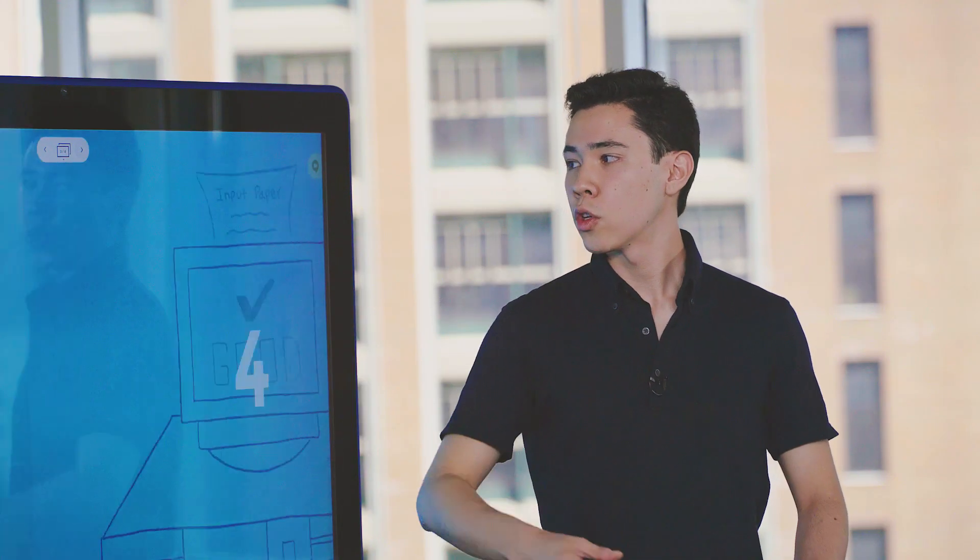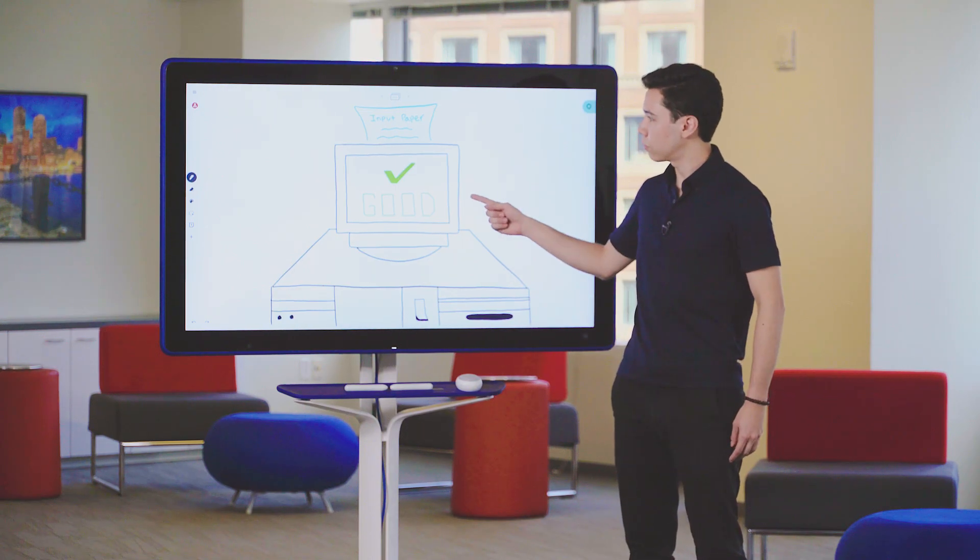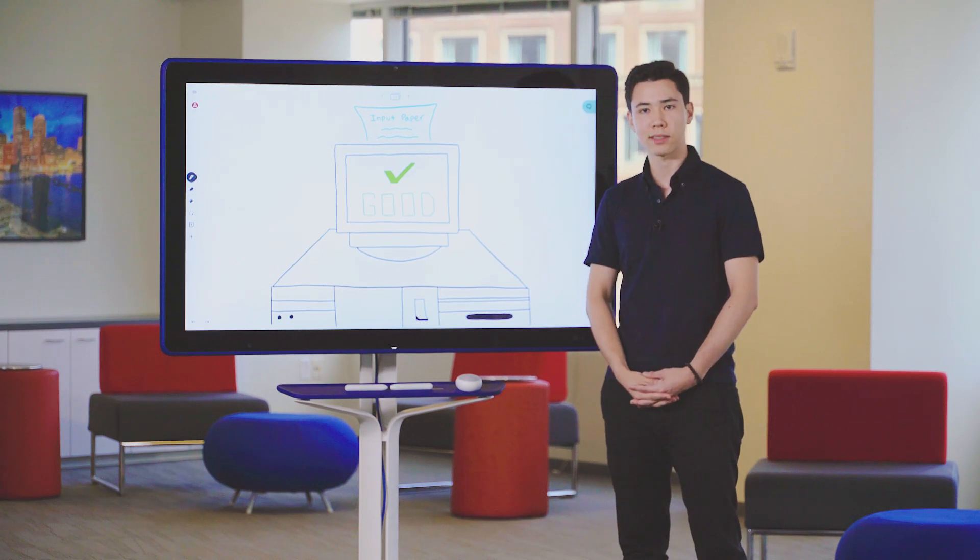Finally, we use the machine learning model that we created and give it a new data point. It would then output its prediction for this data point, which is play tennis or don't play tennis.